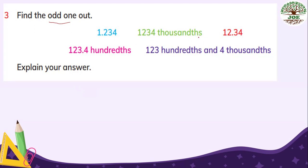1.234 thousands. This is over 1,000. So there will be three decimal places. 1.234. It is three places smaller.